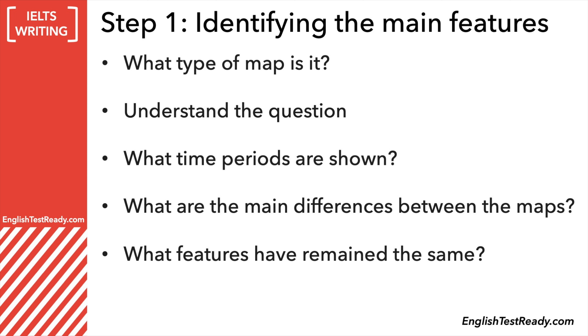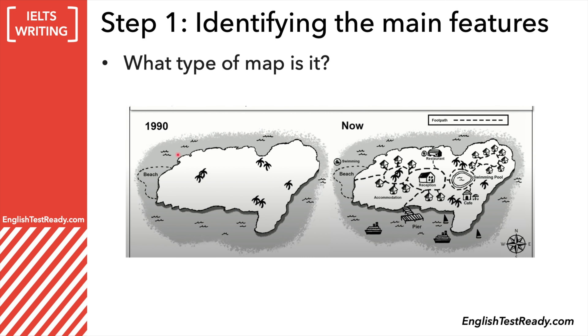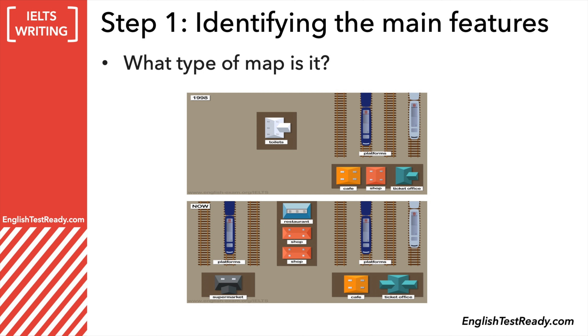The first thing you've got to ask yourself is: what type of map is it? There might be different styles of maps. For example, this one here is a town — this one is very common. You might get an island, like this. You also might get a place, like a train station in this example, or a shopping mall, or a school, or a park, anything like that. Basically, the IELTS test can ask you to describe lots of different types of maps.